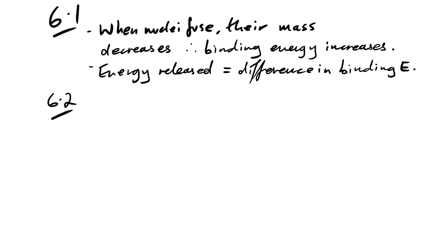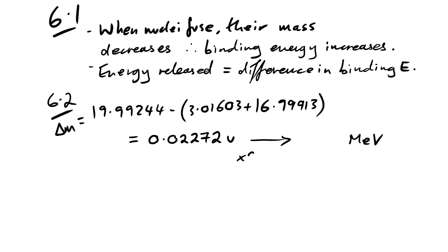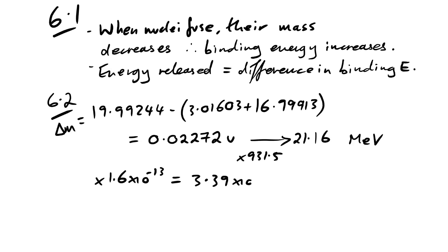Question 6.2: find the energy released in the given fusion reaction. First find the mass defect — mass of products minus total mass of reactants — giving Δm = 0.02272 u. Converting to MeV by multiplying by 931.5 (from the formula sheet): E = 21.16 MeV. Converting to joules: 21.16 × 1.6 × 10⁻¹³ = 3.39 × 10⁻¹² J.